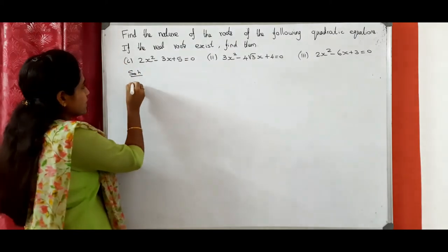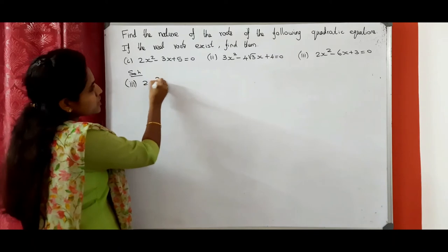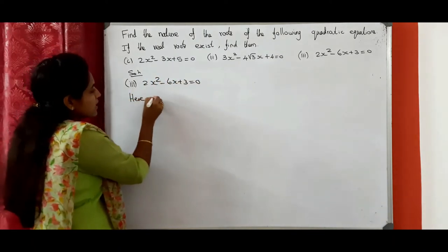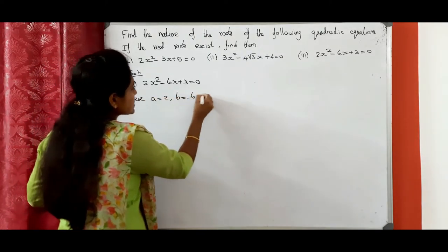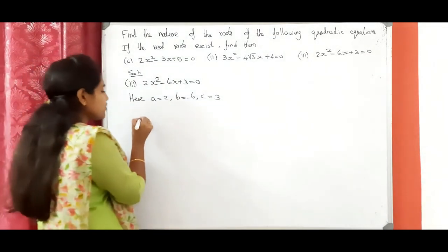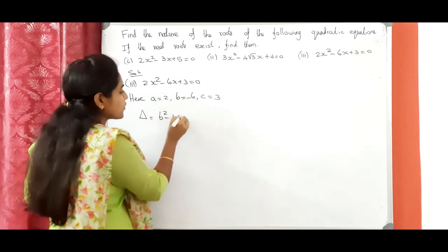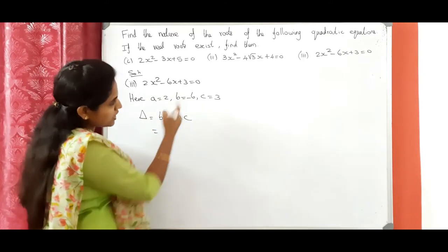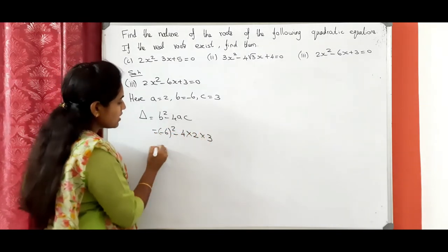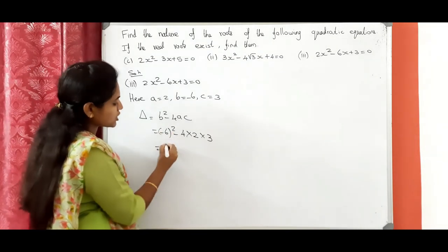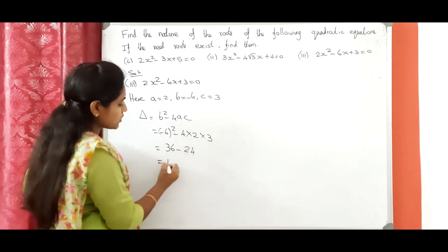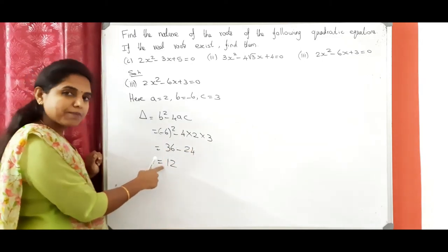Now the third problem: 2x squared minus 6x plus 3 equals 0. Here a equals 2, b equals minus 6, c equals 3. First, we need to find the discriminant. Delta equals b squared minus 4ac, which equals minus 6 whole squared minus 4 into 2 into 3. Minus into minus gives plus, so 6 squared equals 36 minus 8 into 3 equals 24. So 36 minus 24 equals 12, which is positive.